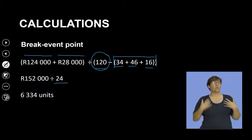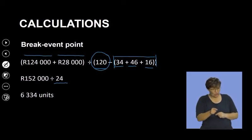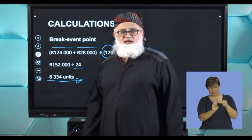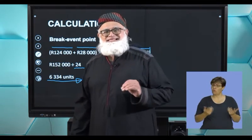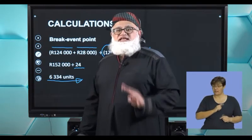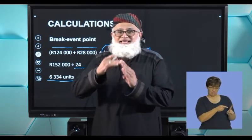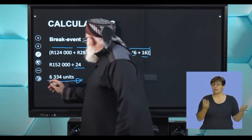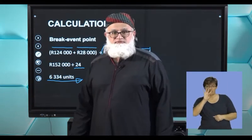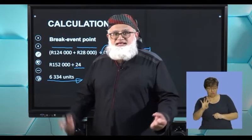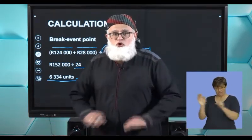This is critical — when doing this calculation in an exam or activity, the answer will always be in units. The break even calculation: 152,000 divided by 24,000 gives 6,334 units. This indicator informs you that in order for this factory to break even, they need to produce and sell 6,334 units.